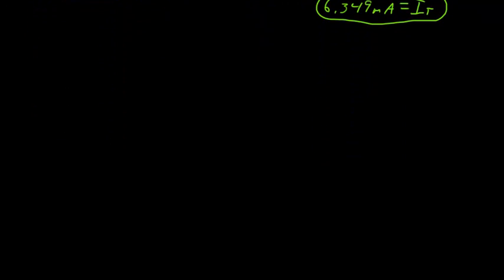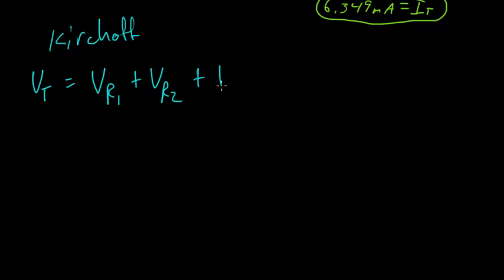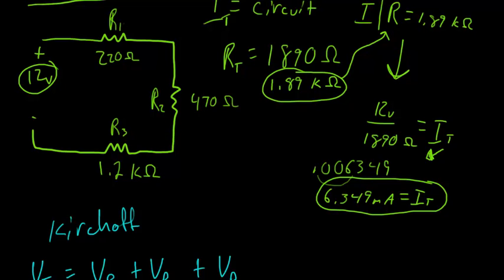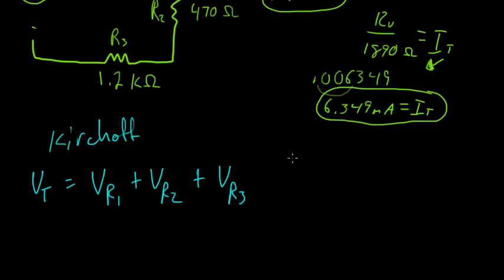So now we need Kirchhoff's Law. So let's choose a different color. Let's do blue this time. So Kirchhoff. And Kirchhoff's Voltage Law said that the total voltage is equal to the voltage at each component summed up. So the voltage of R1, or the voltage at component 1, plus the voltage at R2, plus the voltage at R3. That's Kirchhoff's Law right there.